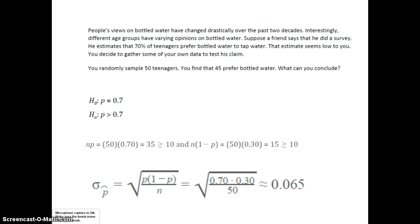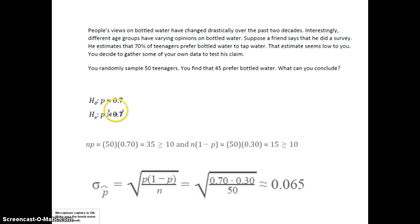Let's look at an example. People's views on bottled water have changed drastically over the past two decades, with different age groups having varying opinions. Suppose a friend says he did a survey and estimates 70% of teenagers prefer bottled water to tap. That estimate seems a bit low to you, so you decide to gather some of your own data to test his claim. We think the 70% is too low, so our alternative hypothesis is that the population proportion is bigger than 0.70. The null hypothesis is p equals 0.70. We randomly sample 50 teenagers and find 45 preferred bottled water.